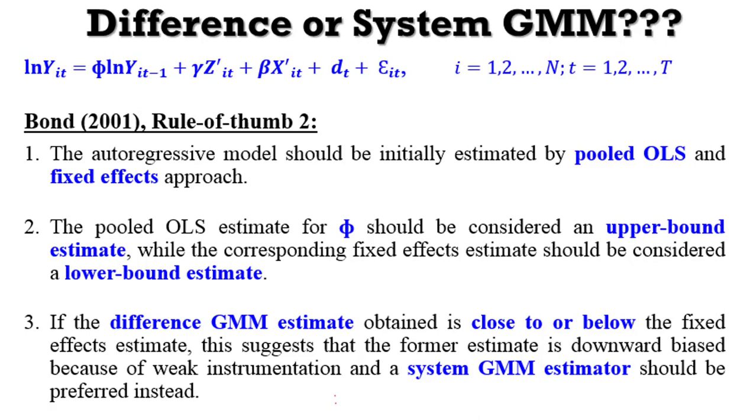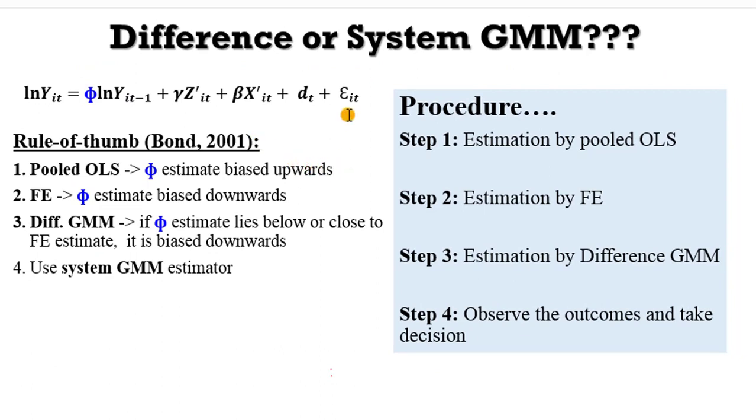So you can see that Bond 2001 has a clearer way by which we can easily decide, so this tutorial will follow the second rule of thumb. Once you estimate this model by pooled OLS, whatever you obtain as the coefficient of the lag dependent variable is assumed to be biased upwards, while the same coefficient for the fixed effects estimation procedure is biased downwards. You estimate the same model using Difference GMM, and if that estimate lies below or is close to fixed effects, it also means that the Difference GMM estimate is downward biased, and to correct that you have to estimate the model with the System GMM estimator. So I have outlined the procedure that we are going to take in this tutorial here: Step 1, we estimate the model by pooled OLS. Step 2, we estimate the same model by fixed effects. Step 3, we estimate the same model using the Difference GMM. We observe the outcome in Step 4 and we take our decision.